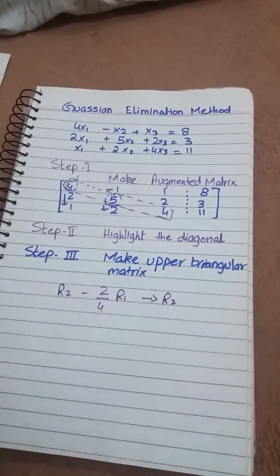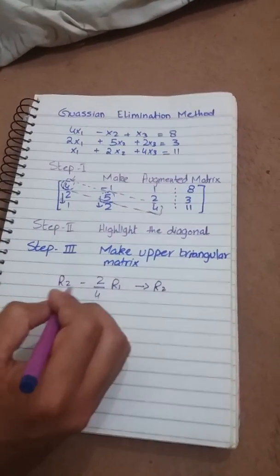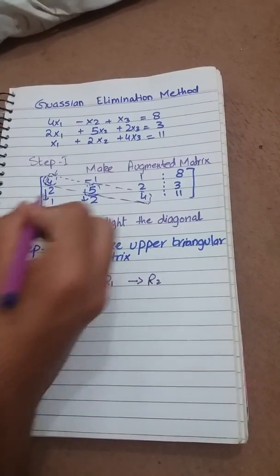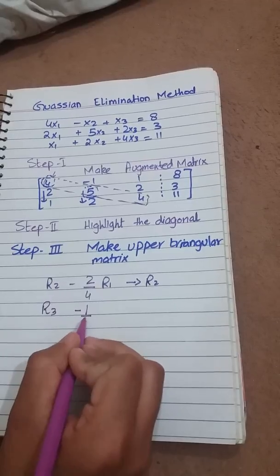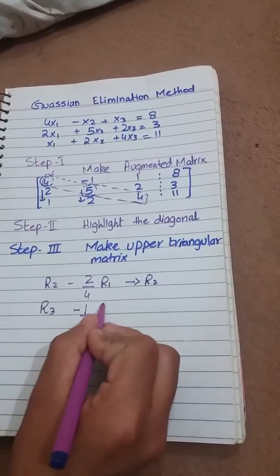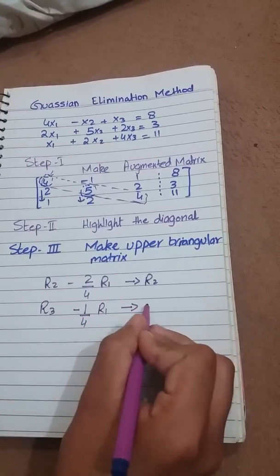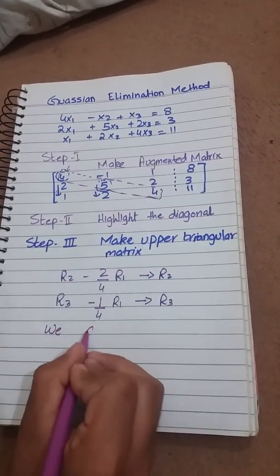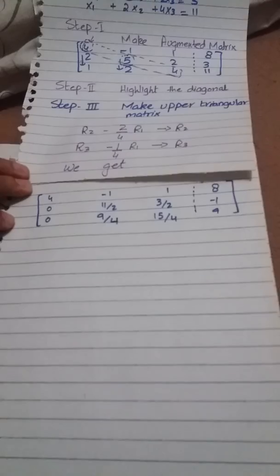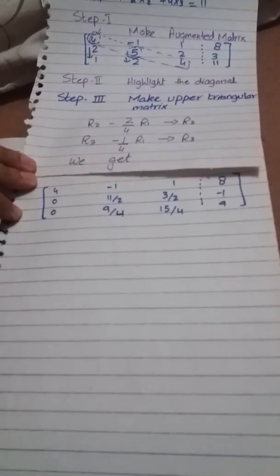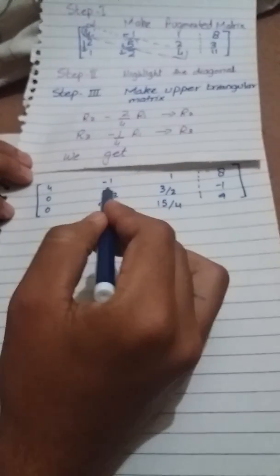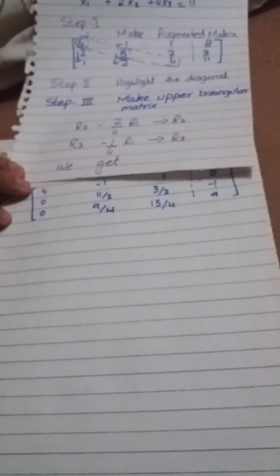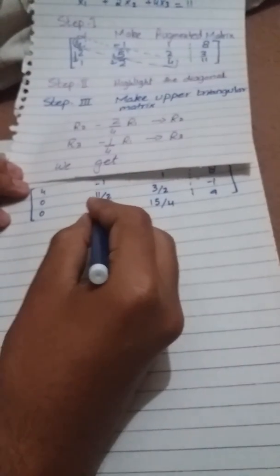Same like this for row 3: R3 minus 1 divided by 4 into R1 changing in R3. We get this after performing these two row operations.